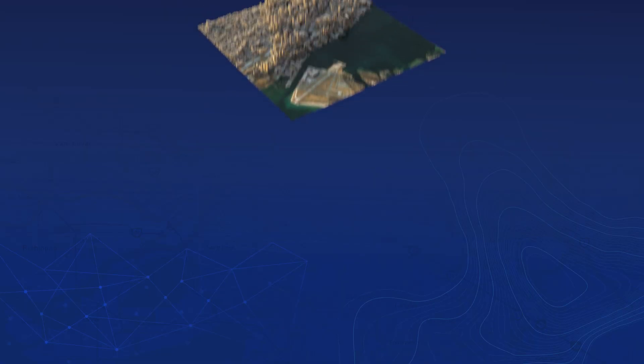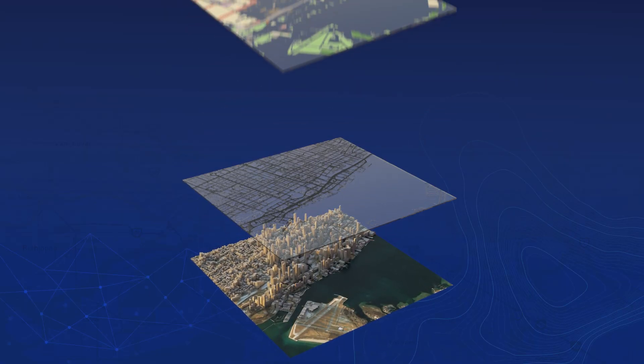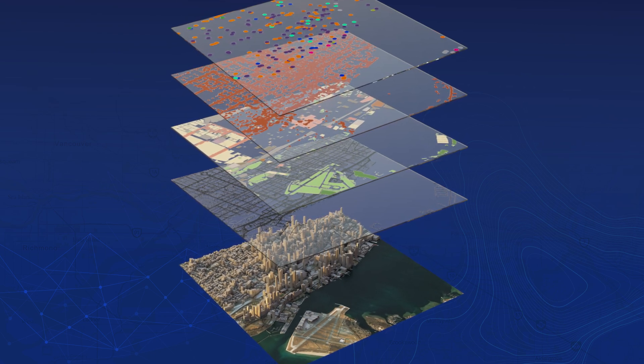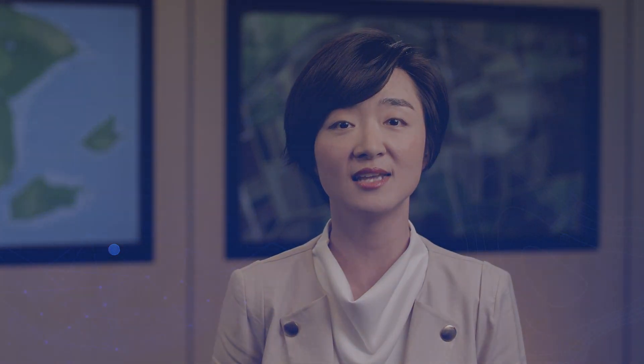The geographic approach is about integrating and organizing various information through location so you have a 360 view. When you're working with others, the geographic approach helps you build consensus because you're all looking at the same contextual information. This integrated common view allows you to plan more intelligently, mitigate risks of cost overruns, and make sound decisions for more resilient and cost-effective asset investment plans.